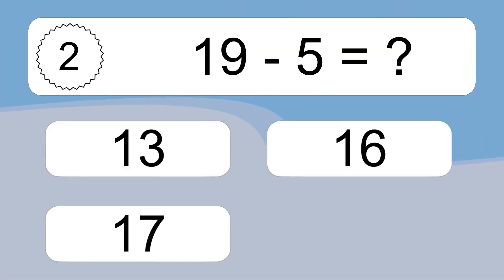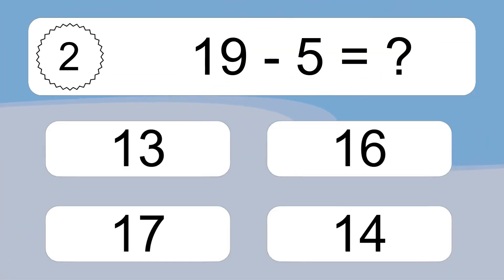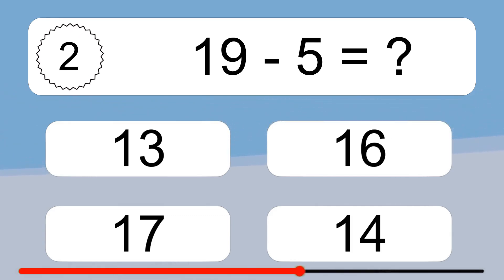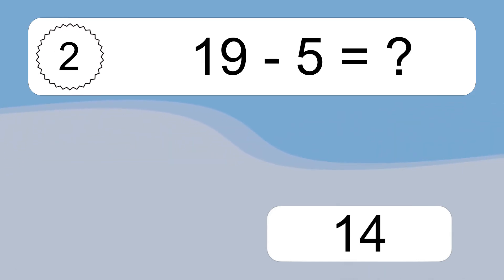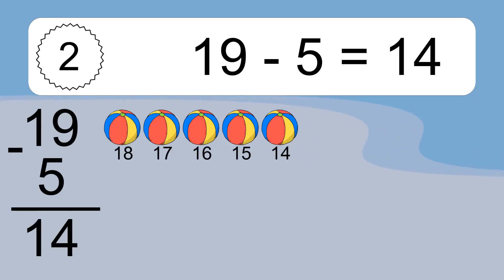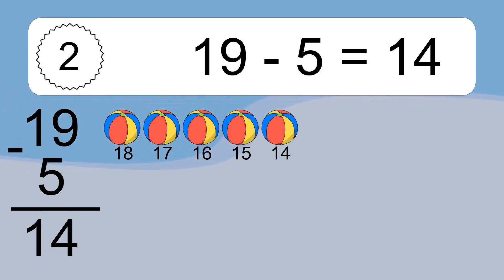19 minus 5 equals what? 19 minus 5 equals 14. Let's count it: 18, 17, 16, 15, 14.